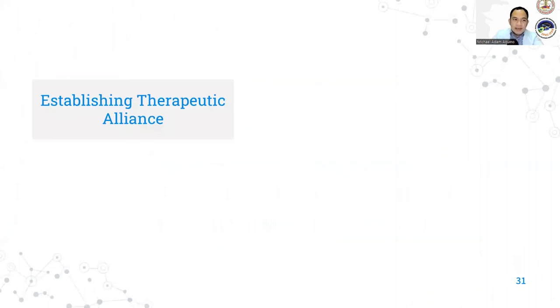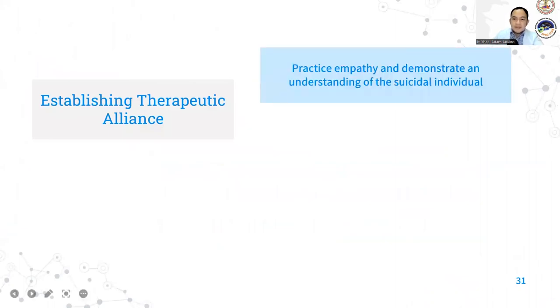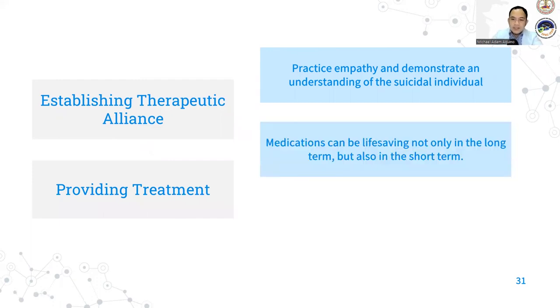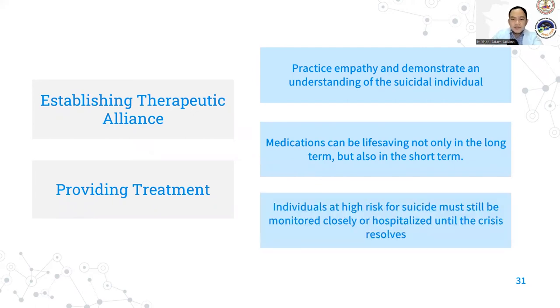So we establish therapeutic alliance. We can do this by practicing empathy and demonstrating the understanding of the societal individual. Next is to provide them with treatment. This can be medications, which can be life saving, not only in the long term, but also in the short term. Individuals at high risk for suicide must be monitored closely or could be hospitalized until the crisis resolves. So treatment for people at risk for suicide can include various forms of psychotherapy delivered by healthcare providers to help individuals with these mental health issues and other suicide risk factors with problem solving and emotional regulation. These treatments usually take place in a one-on-one or group format between the patients and the clinicians and can vary in duration.